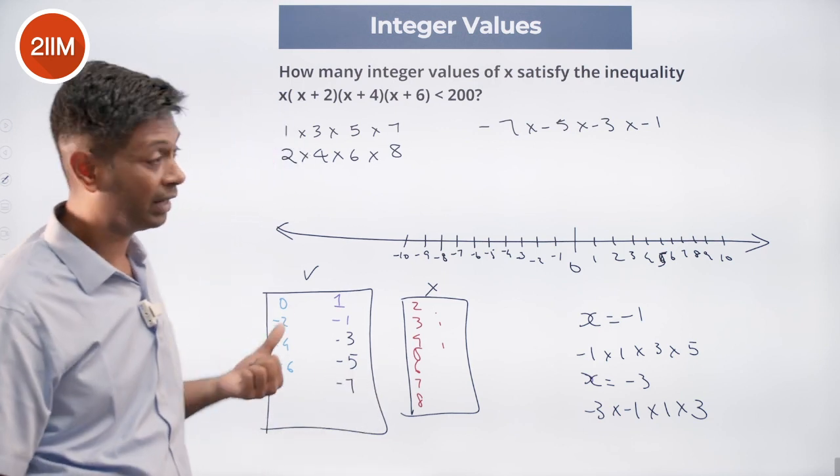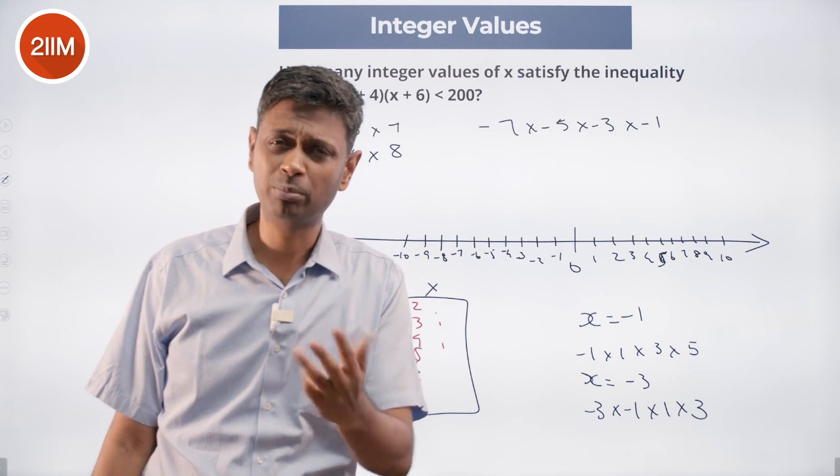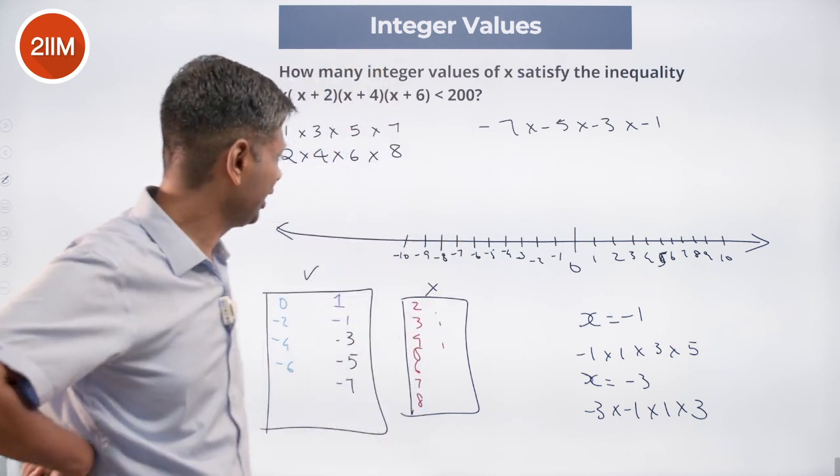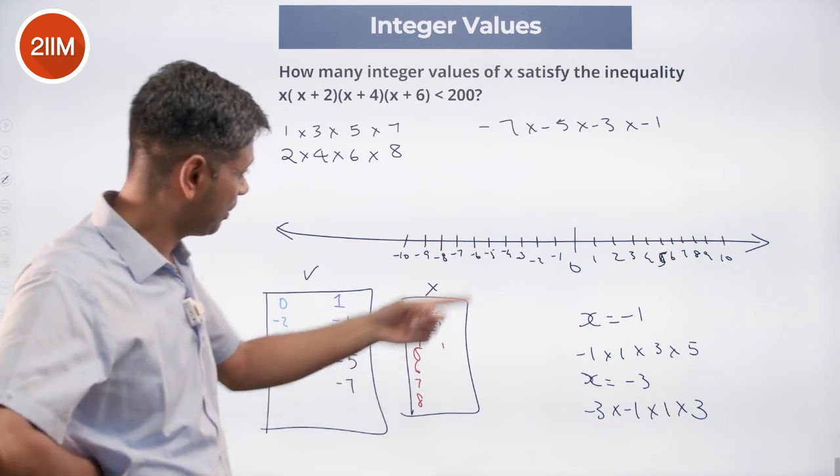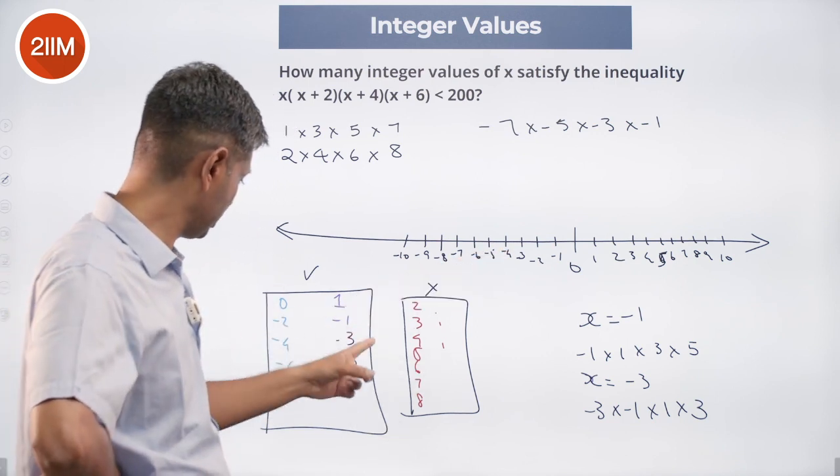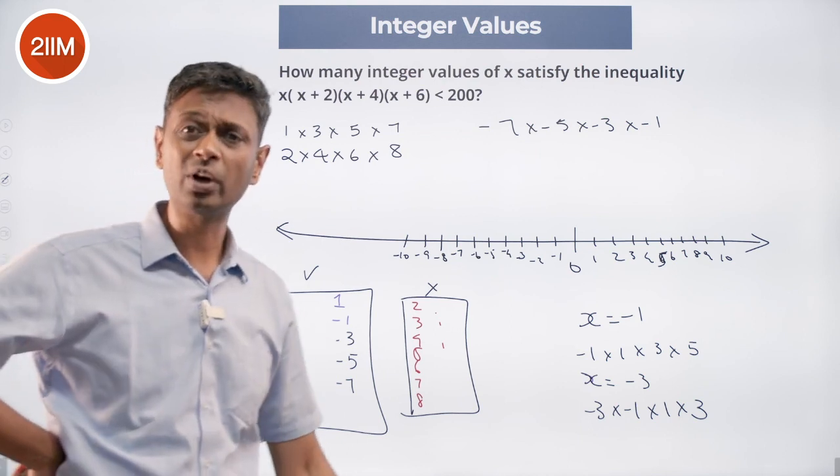If I take minus 5, minus 3, minus 1, plus 1, the product is negative. That definitely works. It looks like when I go from negative territory, minus 1, minus 2, minus 3, minus 4, minus 5, minus 6, minus 7, all of them work.